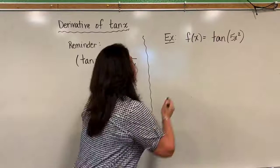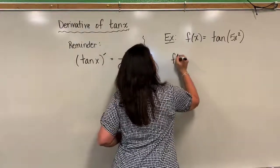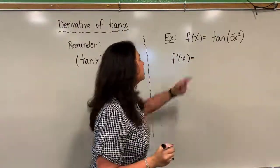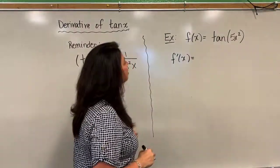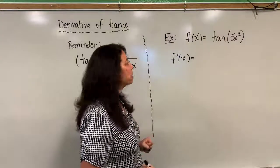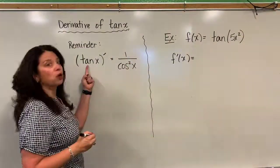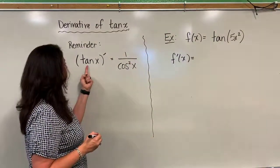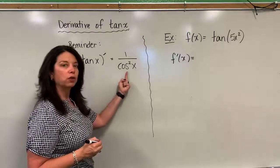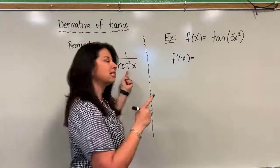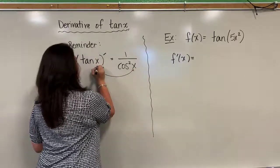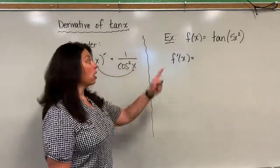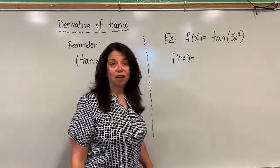So here we go. We have f prime of X to start out for my derivative, and I see right away that my outside function of this tan of 5X squared is in fact tangent. So I remind myself, the derivative of tangent X is simply 1 over cosine squared X, but note that is true when your arguments are just X's. My argument though is something different—it's 5X squared.